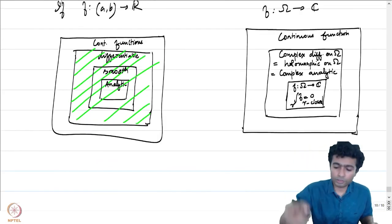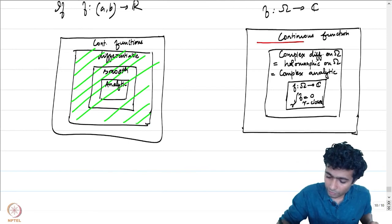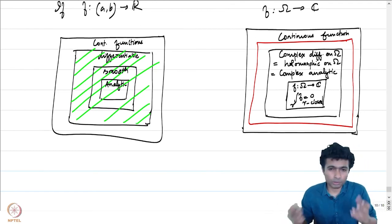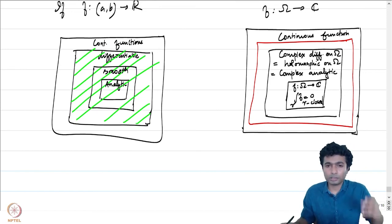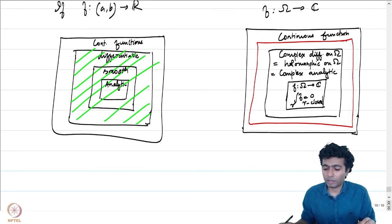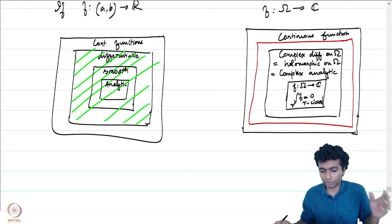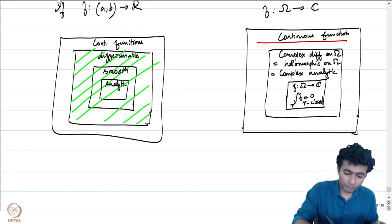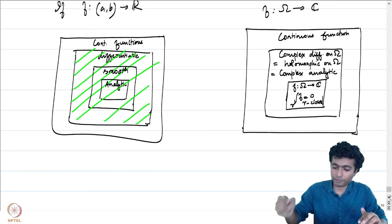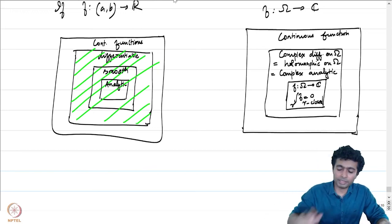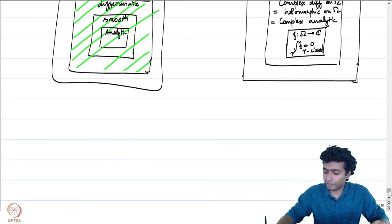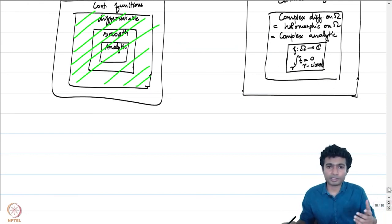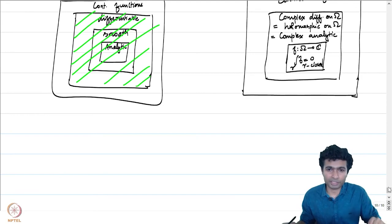There is one more interesting class: functions f : ω → ℂ such that ∫_γ f = 0 for all closed curves γ. This is a special class — for example, on ω = ℂ \ {0} the function f = 1/z does not have this property. If ω is simply connected this class coincides with the holomorphic functions, but generally not. There are also real differentiable functions that do not satisfy the Cauchy-Riemann equations — these are not complex differentiable. In the next lecture we will solve problems using the various applications and consequences of Cauchy's theorem discussed this week.